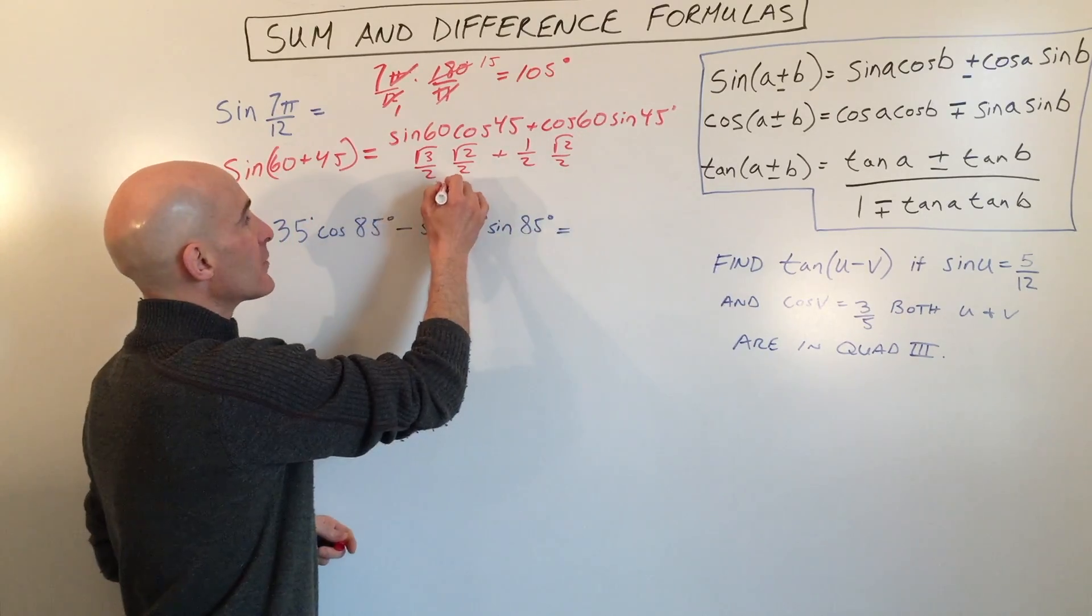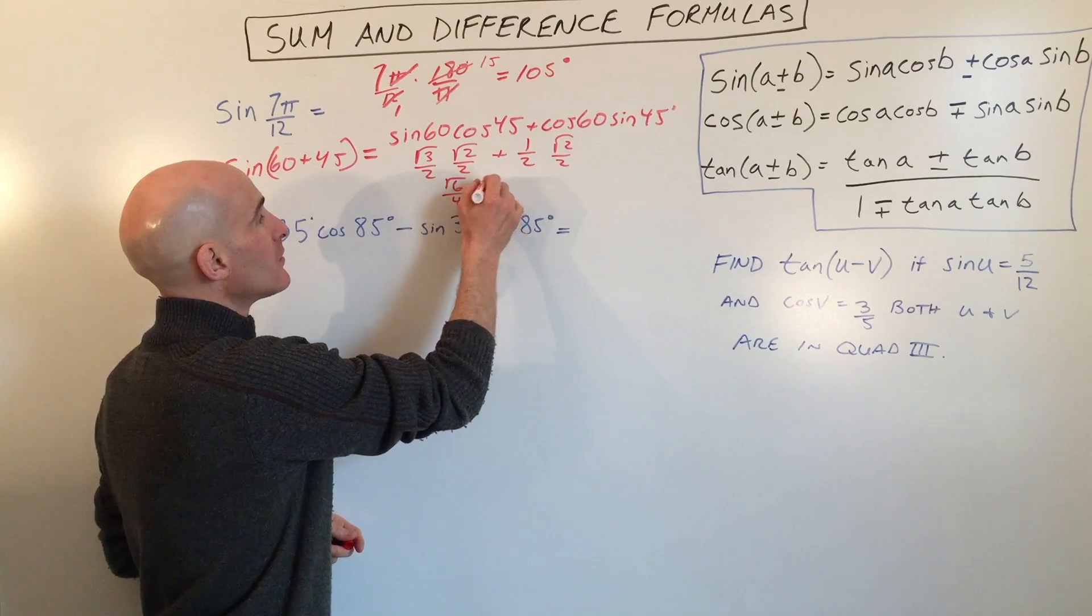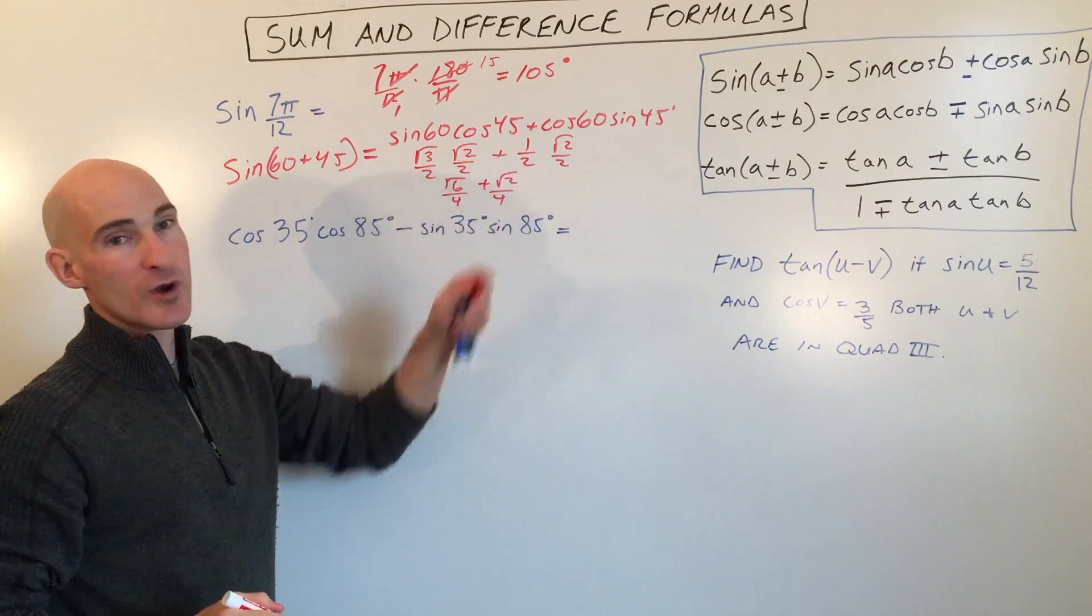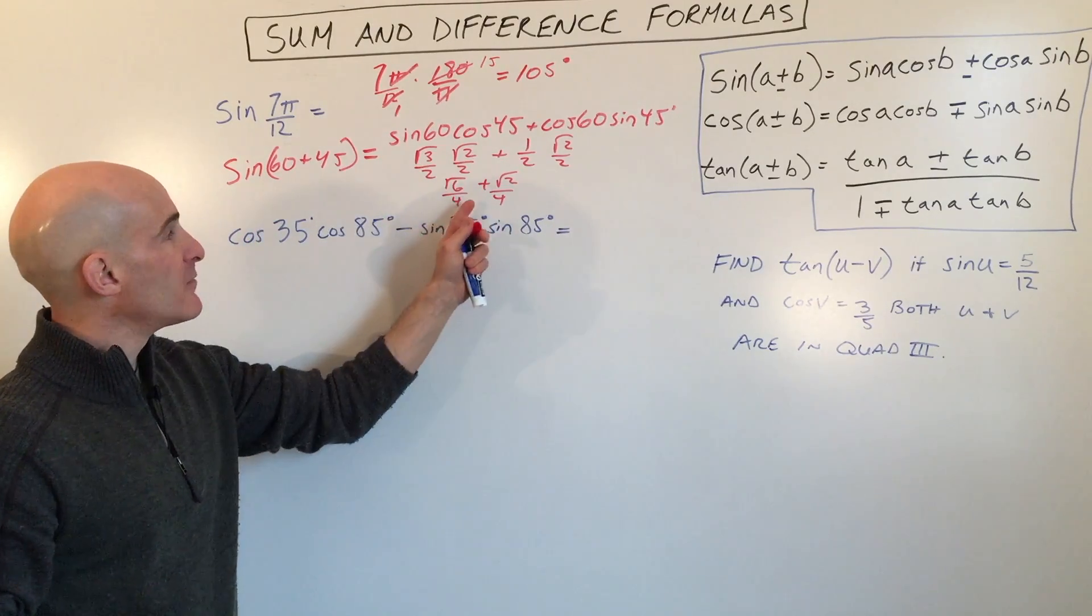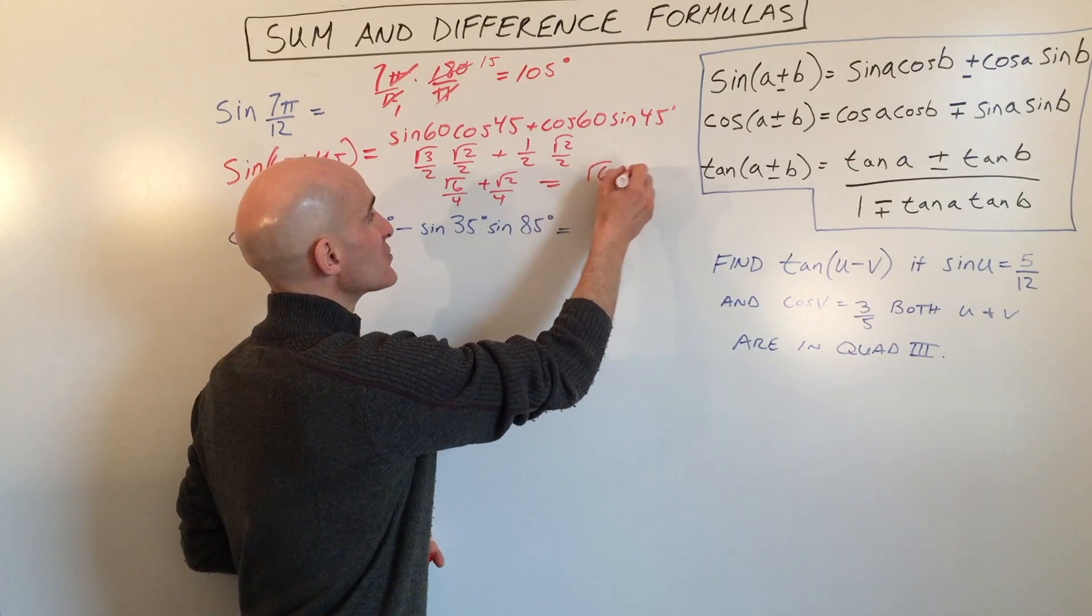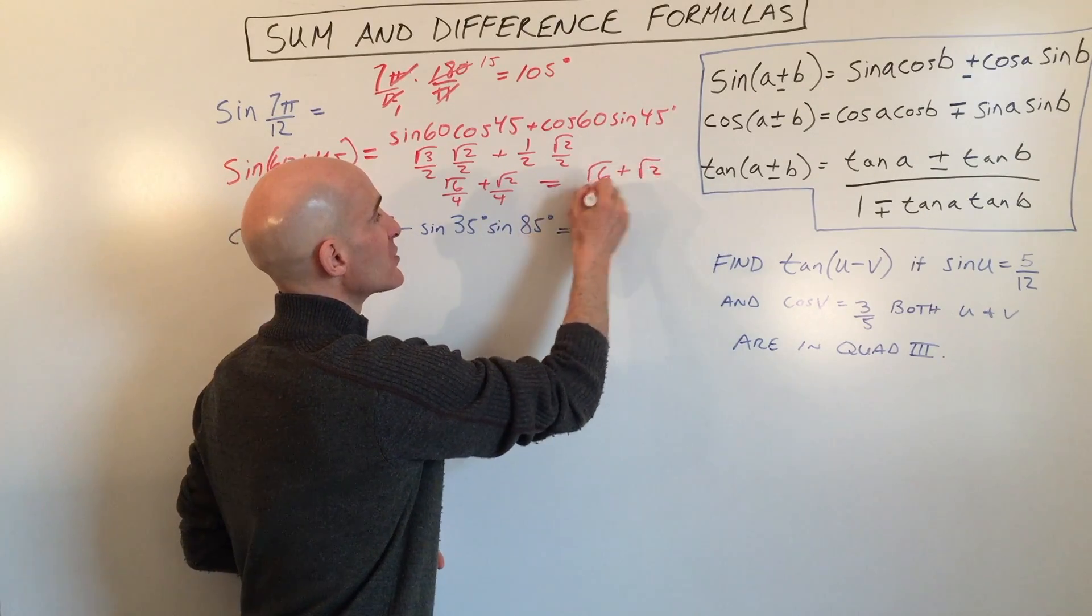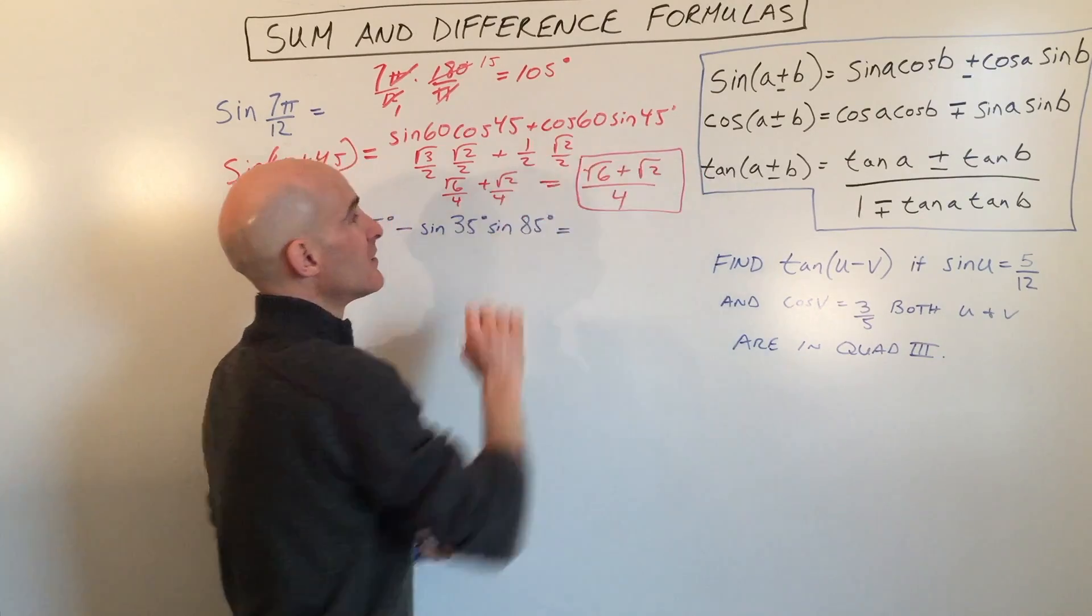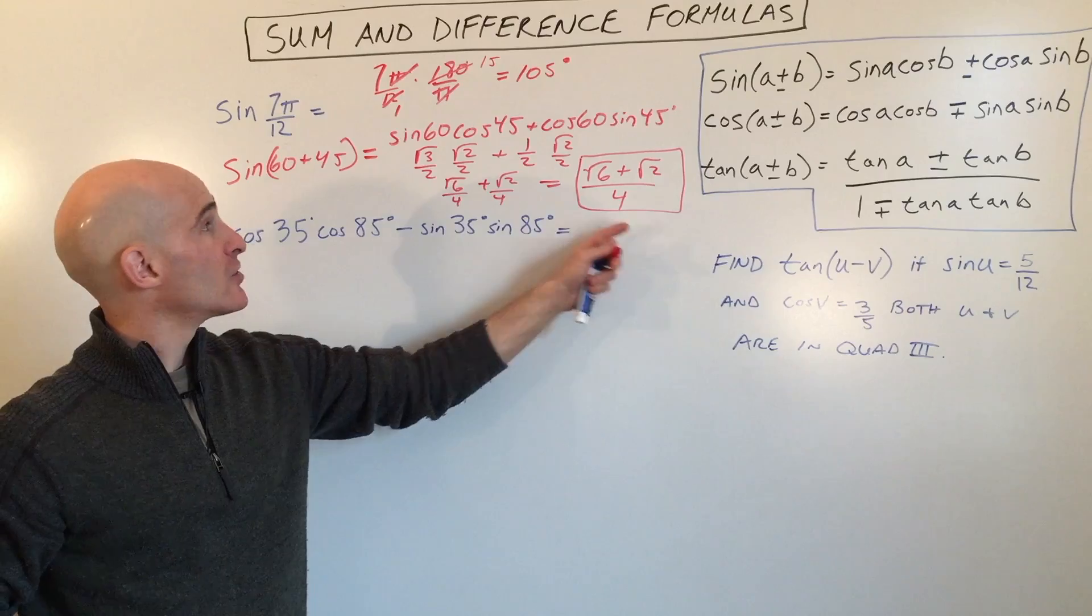Multiply these together. Square root 6 over 4 plus square root 2 over 4. So I'm just multiplying numerators and denominators. And then because these have the same denominator, we can combine them together into one fraction. So square root of 6 plus square root of 2 all divided by 4. So this is an exact answer.